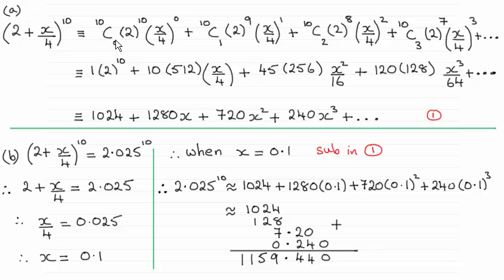And just to take you through this then, we start with the power, 10 in this case. We do 10C0, 10C1, 10C2, 10C3, and so on. We take the first term, 2, and we start with the power 10 here, and then reduce it down by one power each time, okay? As you can see.